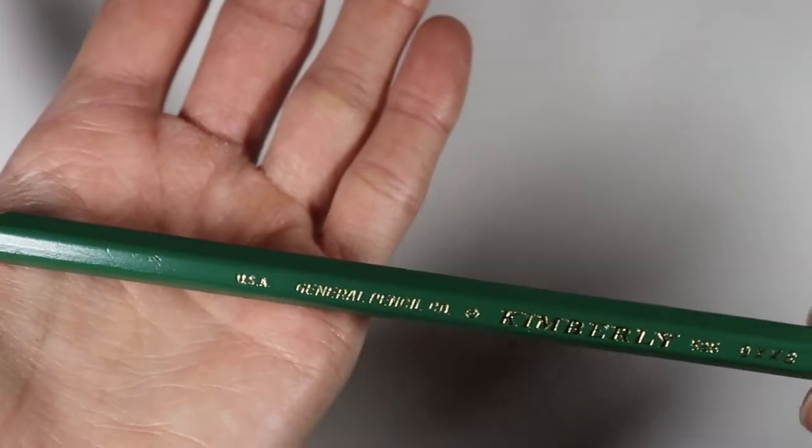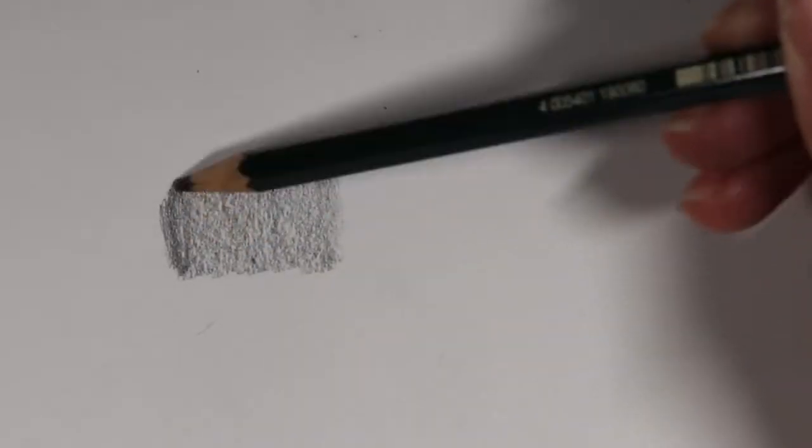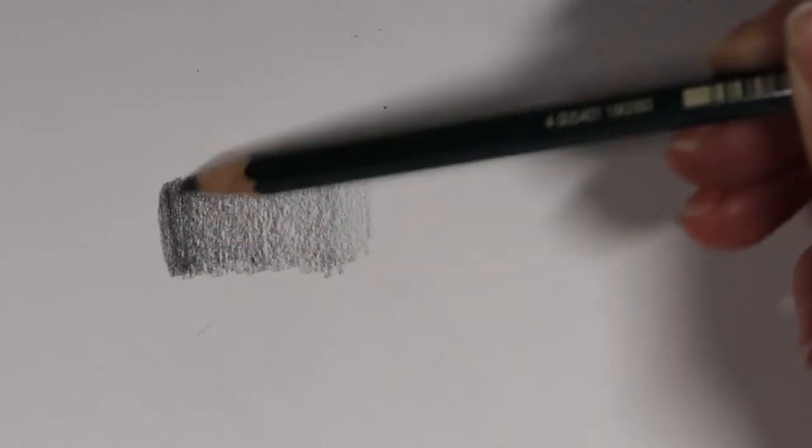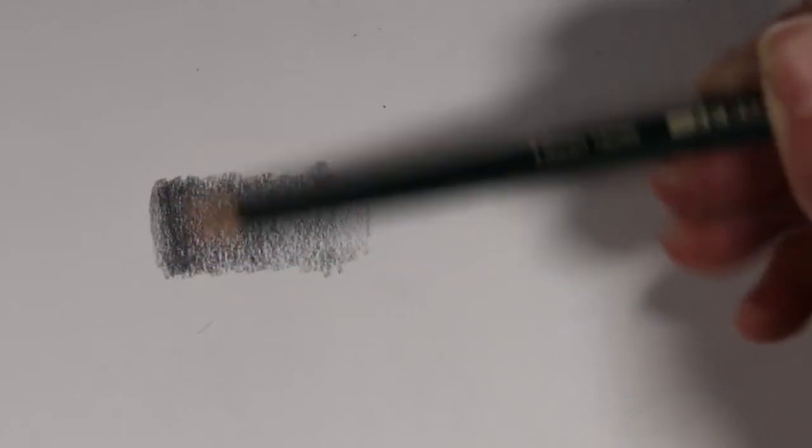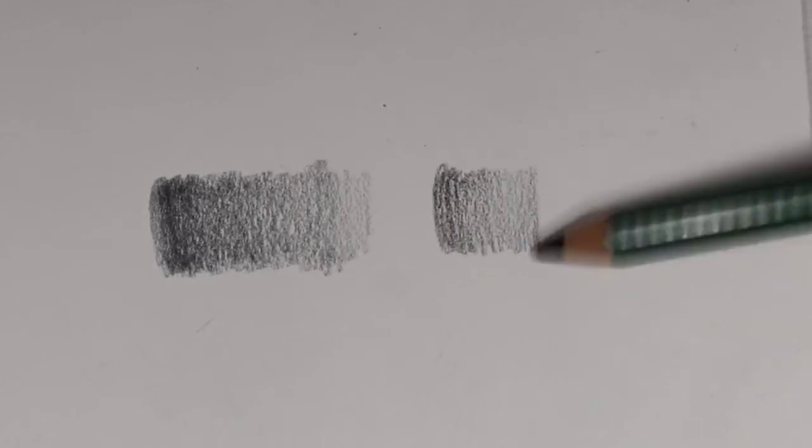Number four on my list is this Kimberly 9XXB pencil. This pencil is honestly great for anybody who has trouble getting dark values in their graphite work even if you have a range all the way up to like a 7 or 8B pencil. You might find that you're not getting tones or values dark enough.